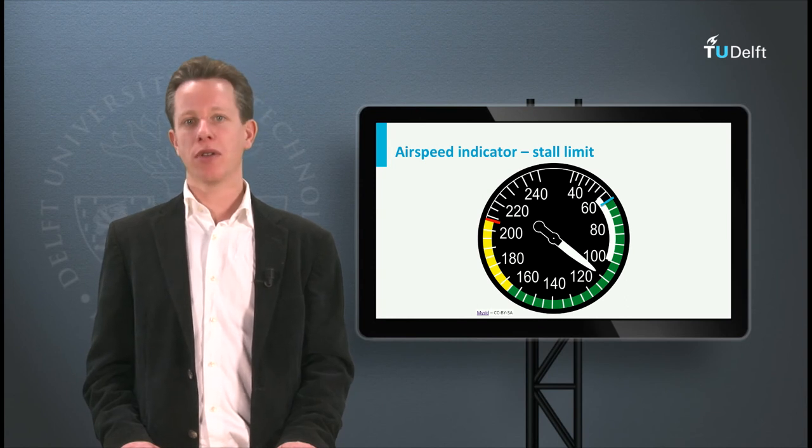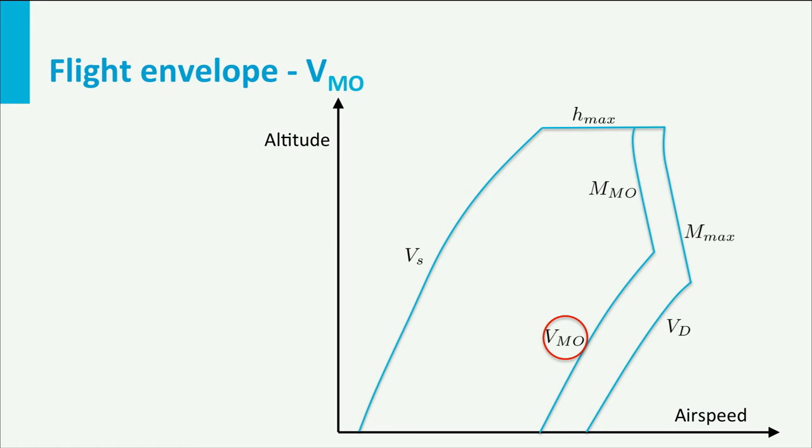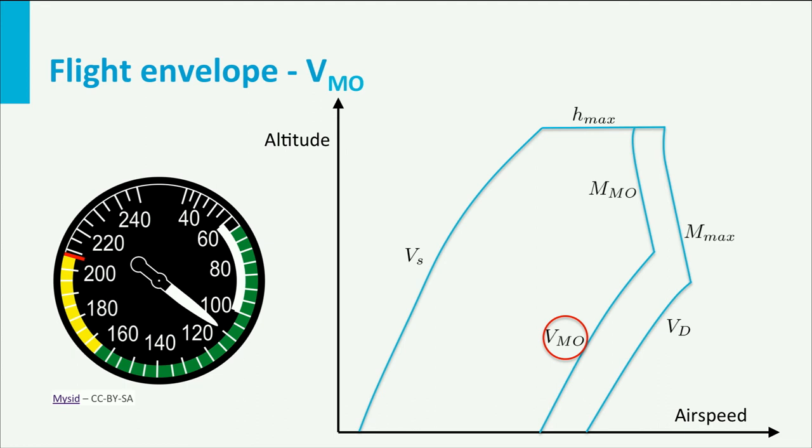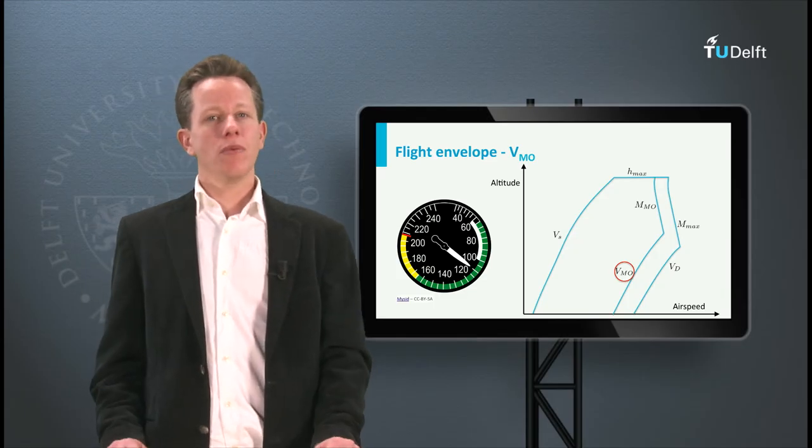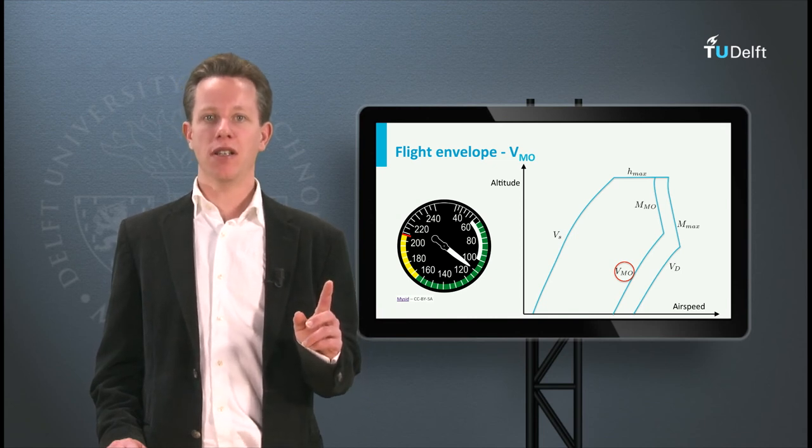If we go back to the diagram with our limits, we can see that the maximum operating airspeed has the same shape as the stall speed. This limit is also constant when expressed as equivalent airspeed on the airspeed indicator. This limit is indicated by the yellow bar. Flying above that speed is only safe in very good atmospheric conditions without any gusts. So two limits can be indicated with a fixed boundary on the airspeed indicator.